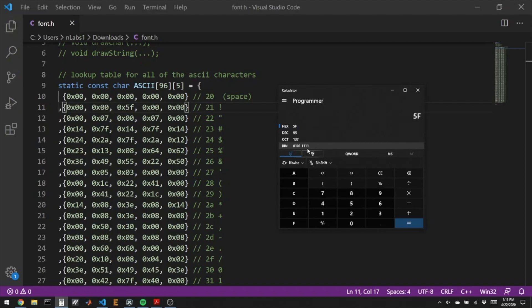So if we were to take those bits and flip them up, kind of like rotate them to the left by 90 degrees, it would be on, on, on, on, on, off, on, off. So those on's represent like the top part of the exclamation point and then the 0, 1, 0 represents the dot.